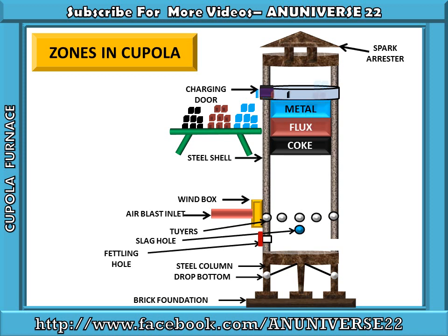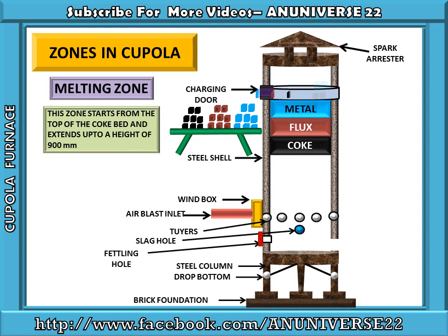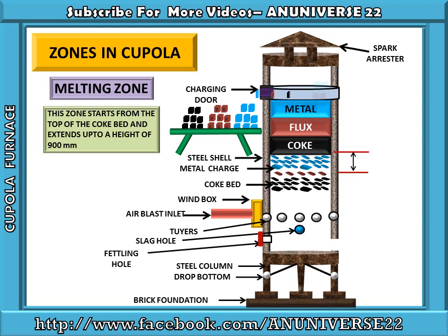Now we will discuss the various types of zones at various stages in cupola one by one. The first one is melting zone. This zone starts from the top of the coke bed and extends up to a height of 900 mm. This is the metal charge and this is the coke bed. The temperature in the melting zone is approximately 1600 degrees Celsius — the highest temperature. The reaction that takes place in this zone is: 3Fe + 2CO → Fe3C + CO2.